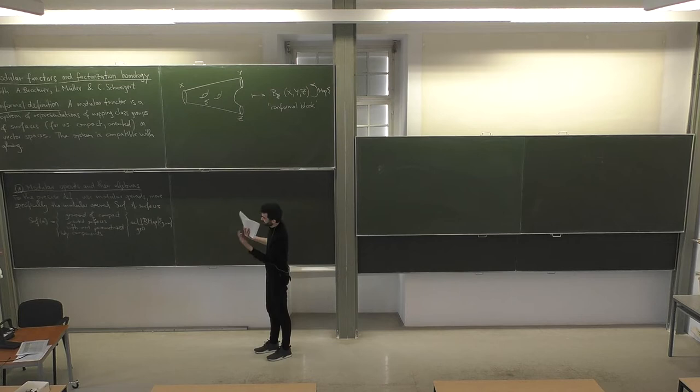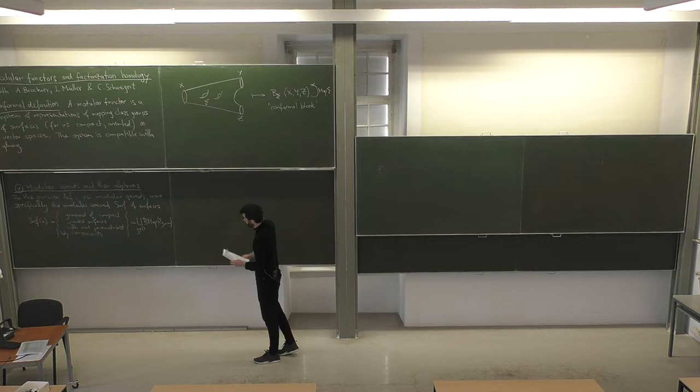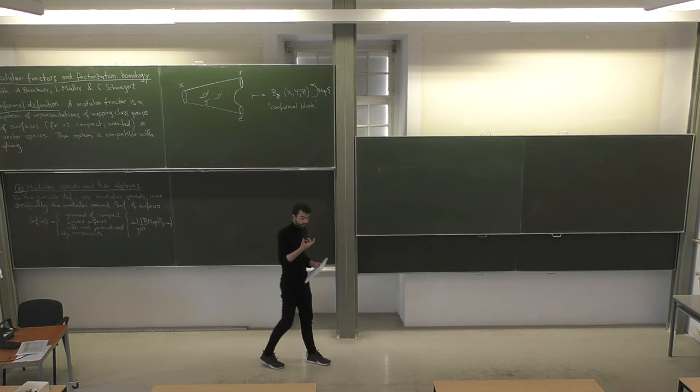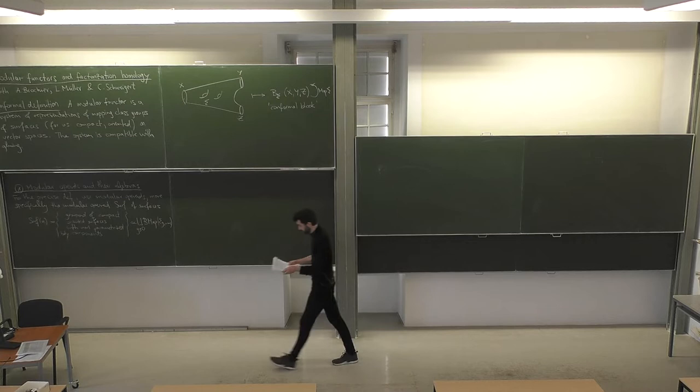The very word 'modular' in modular operad refers to this — this is the thing Getzler and Kapranov had in mind when they came up with this definition. A modular operad is not only an operad; it is also a cyclic operad, so we have a consistent way of cyclically permuting inputs and outputs. In a modular operad, we also have self-compositions of operations.